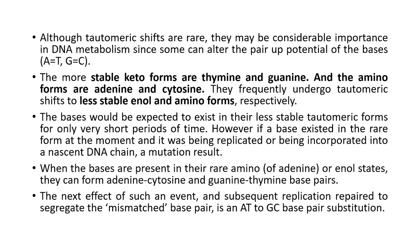However, if a base existed in the rare form at the moment it was being replicated or being incorporated into a nascent DNA chain, a mutation results. When the bases are present in their rare imino or enol states, they can form adenine-cytosine and guanine-thymine base pairs. Therefore, this peculiarity in the structure of the purines may result in a change in base pairing.